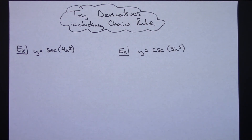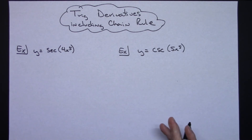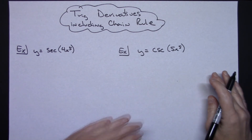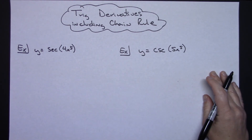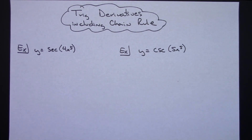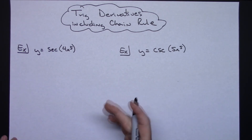In this video I'm going to work out four examples of some trig derivatives, each of them probably including a chain rule at some point. At this point I'm assuming that you know all of your trig derivatives and you have been introduced to chain rule.